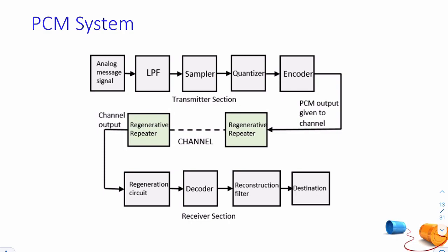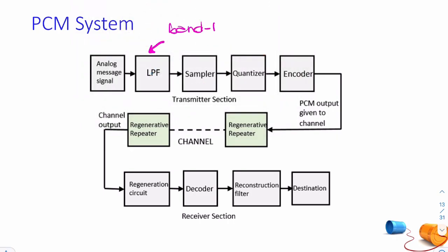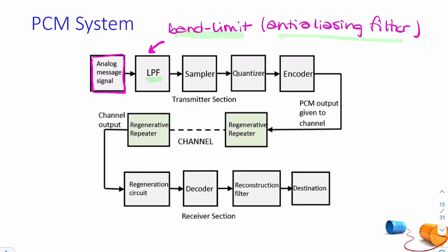Putting this into the full PCM system flowchart: before the sampler we have our analog message passed through a low-pass filter. This is to band-limit the original signal — you can think of it as an anti-aliasing filter, because by band-limiting our analog signal we prevent the sampler from under-sampling. After encoding, we launch our pulses onto the channel, which is where the signal is most vulnerable to channel degradation: noise, distortion, interference, and attenuation.